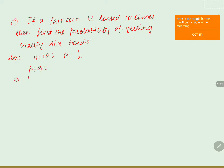We know p = 1/2, so 1/2 + q = 1, which gives q = 1 − 1/2 = 1/2. According to the question, we need exactly six heads, so the value of r = 6. Now we are going to use the binomial probability formula.